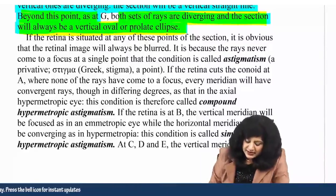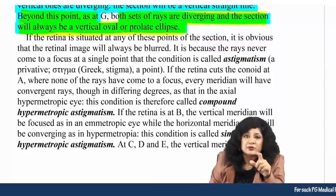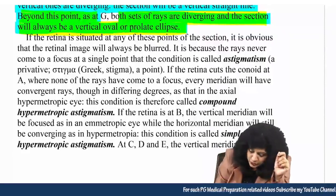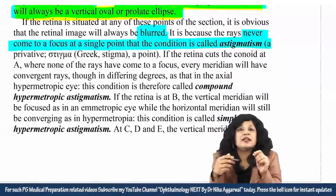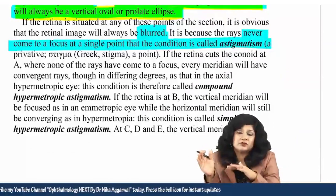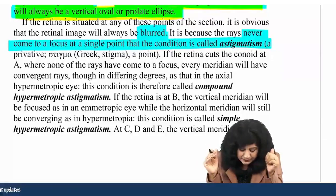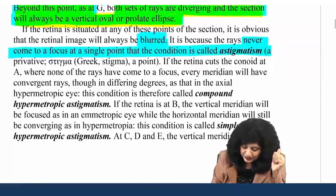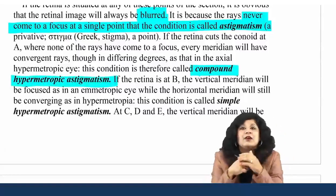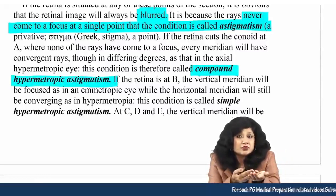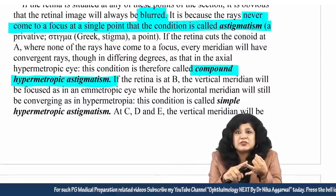If the retina is situated at any of these points, the retinal image will always be blurred, because the rays never come to a point focus — that is the defining quality of astigmatism. If the retina cuts the conoid at point A where none of the rays have come to a focus, every meridian will have convergent rays in differing degrees, so in an axially hypermetropic eye this is called compound hypermetropic astigmatism.